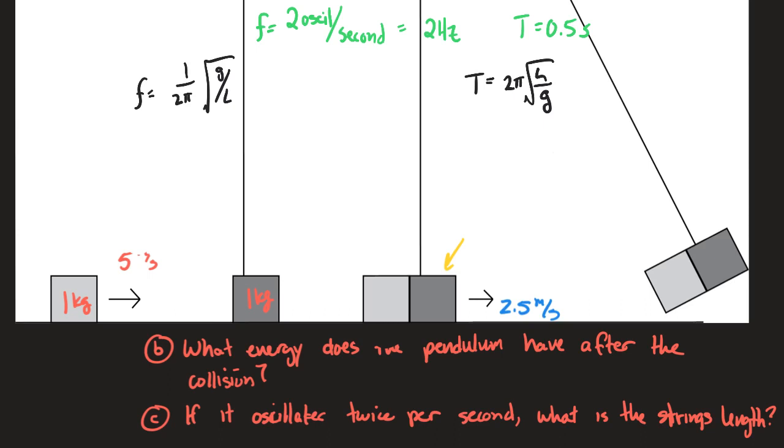But if you guys don't care, then I'm going to say 0.5 divided by 2π squared times 10 equals the length. I don't know what that is but it doesn't really matter - it's not particularly, it's gonna be a pretty short pendulum.